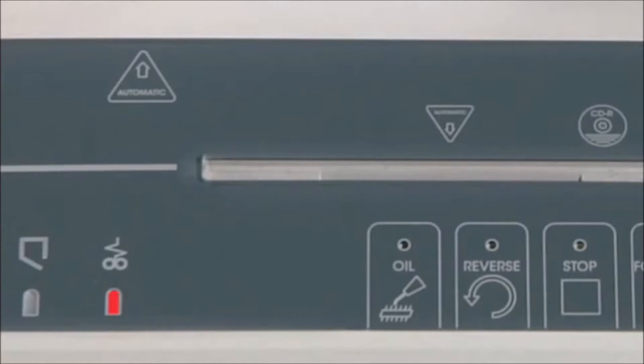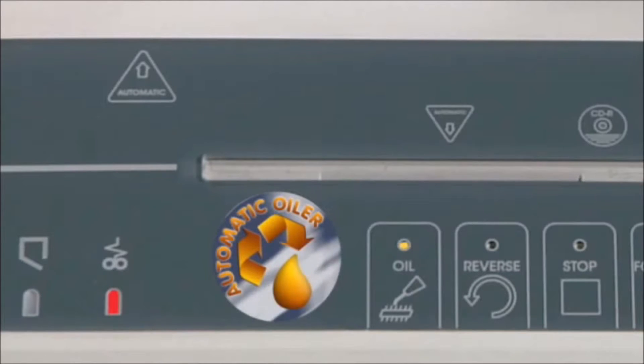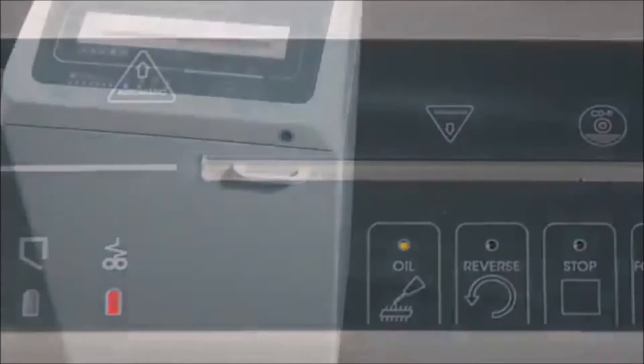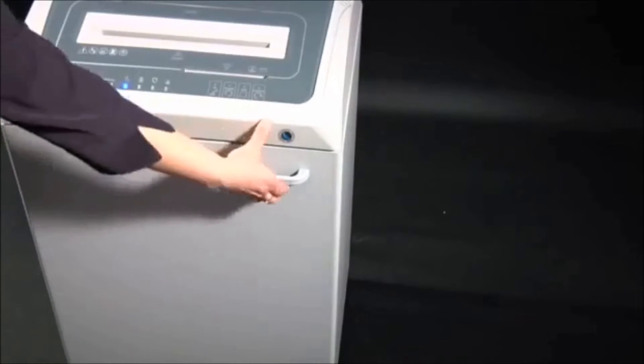The control panel shows a paper jam if the cutting knives need to be oiled or if the integrated automatic oiler bottle is empty. 110 liter cabinet.